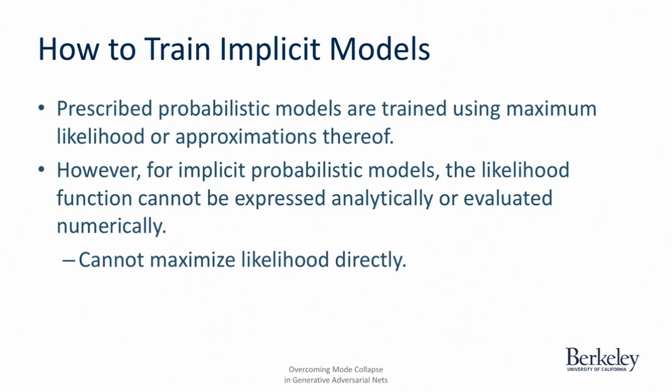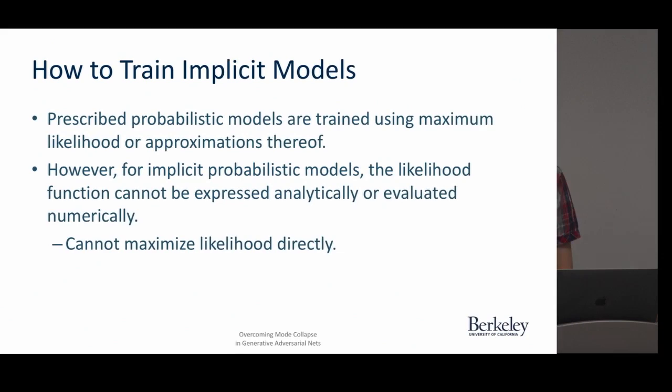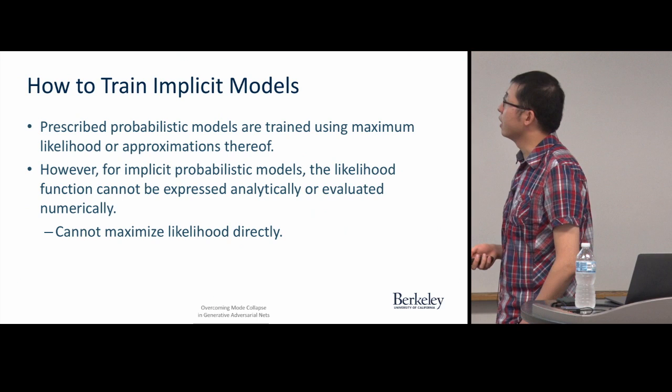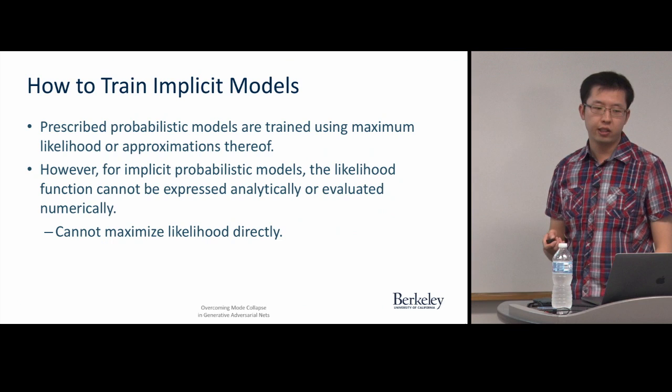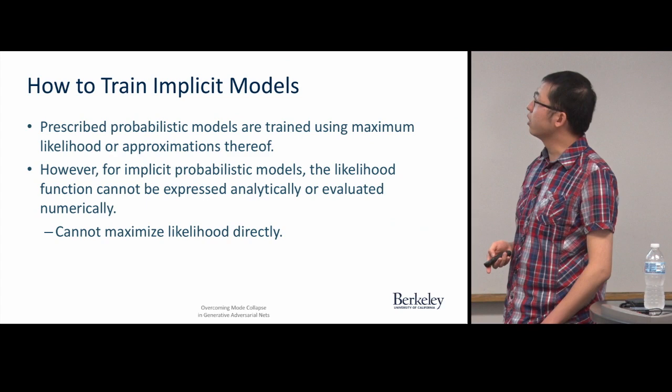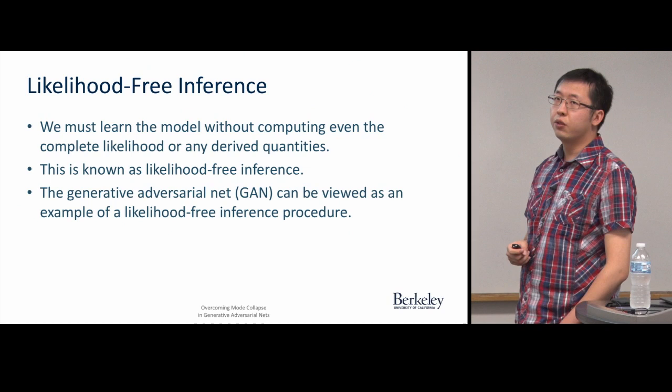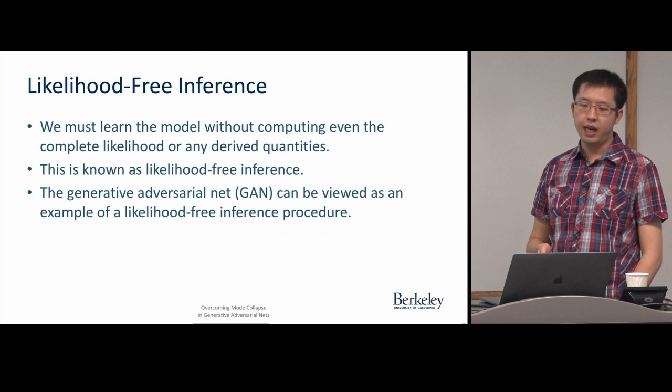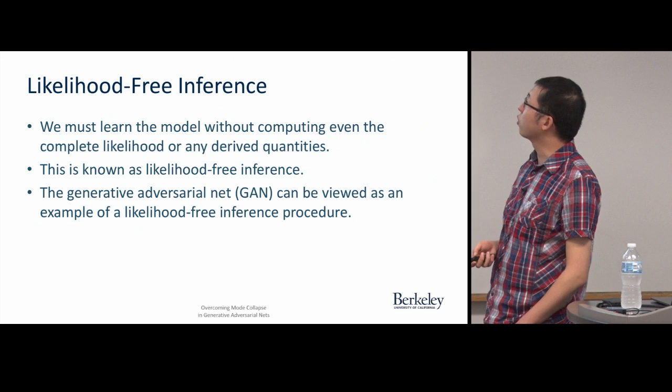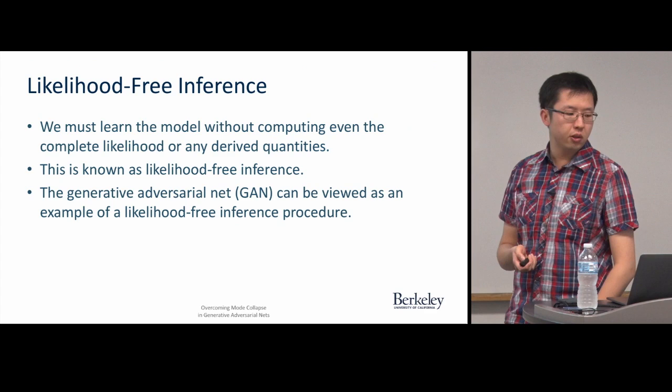How do we actually train implicit models? Prescribed models are more straightforward in that you can train them using maximum likelihood or approximations thereof. However, for implicit probabilistic models it becomes trickier because the likelihood function cannot be expressed analytically or evaluated numerically, so you can't really maximize likelihood directly. Likelihood-free inference refers to the class of methods that can give you parameter estimates without requiring you to know the complete likelihood. The generative adversarial network, or GAN, can be viewed as an example of a likelihood-free inference procedure.